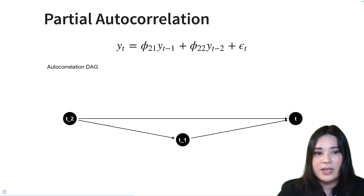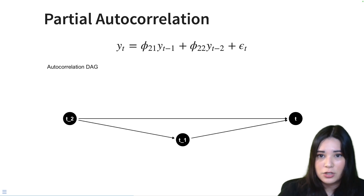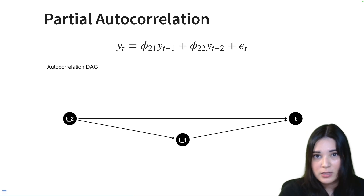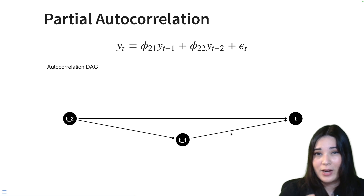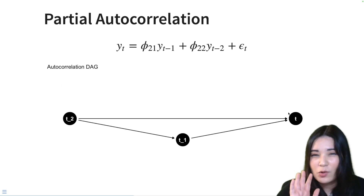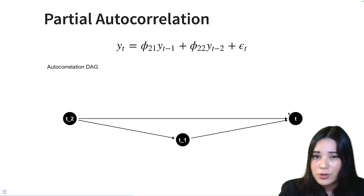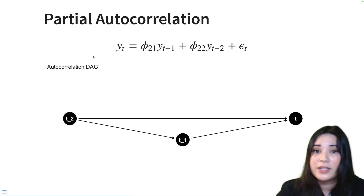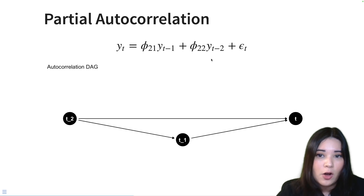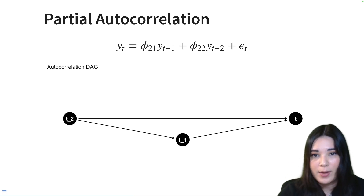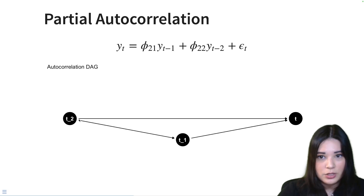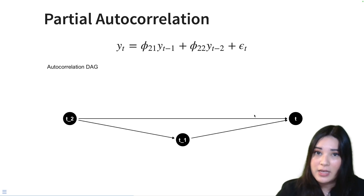Let's say we wanted to estimate the direct effect of two timesteps ago on our current timestep — in other words, the relationship between y(t-2) and y(t). According to this DAG, we have a little bit of a problem. We have a direct effect, which is what we want to estimate, but y(t-2) also has an effect through y(t-1), because y(t-1) is also impacted by y(t-2) since that's the timestep before y(t-1). So there are actually two pathways through which association can flow between t-2 and t: the direct pathway and the indirect pathway.